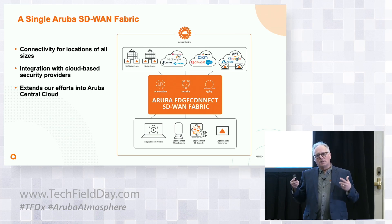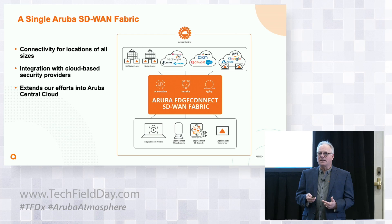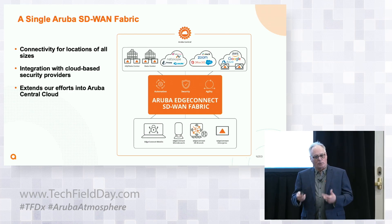What's new is the ability to access this fabric from multiple points. Edge Connect Enterprise is the branding given to the Silver Peak technology that Aruba acquired a year and a half ago. Edge Connect SD Branch is the Aruba-developed SD-WAN solution that we continue to sell. And we have some customers that use both Edge Connect Enterprise and Edge Connect SD Branch in the same network — and this fabric notion really amplifies that.